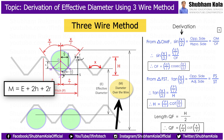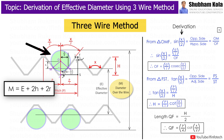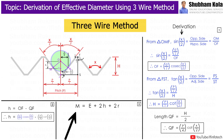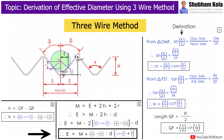Now, distance over the wire denoted as capital M will be equal to E + 2h + 2R, where E is the effective diameter, 2h is twice the distance small h, and 2R is twice the radius of wire. So this total distance is capital M, the diameter over the wire. Therefore, effective diameter E equals M minus 2h minus small d, because twice the radius equals diameter. Putting the values of small h and simplifying, we get the formula for effective diameter E.